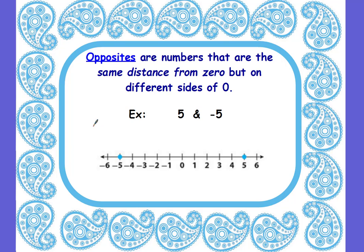Opposites are numbers that are the same distance from zero but on different sides of zero. An example would be five and negative five. Here's our zero, and five is five units to the right. So if we start at zero and go five units to the left — one, two, three, four, five — we land at negative five. So these are opposites.